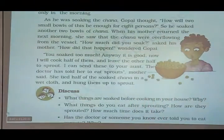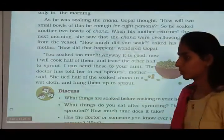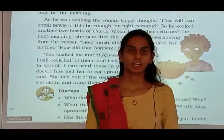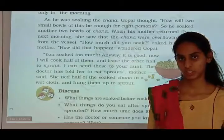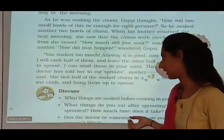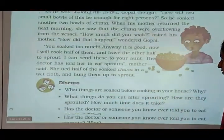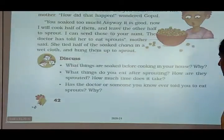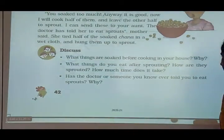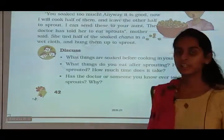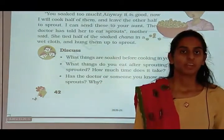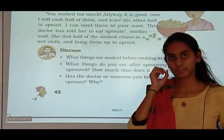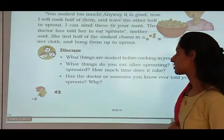She tied half of the soaked chana in a wet cloth and hung them up to sprout. By tying in a wet cloth, the chana gets soaked and sprouts. Now discuss: what things are soaked before cooking in your house? Many things are soaked before cooking, like chana, rajma, and other grams.